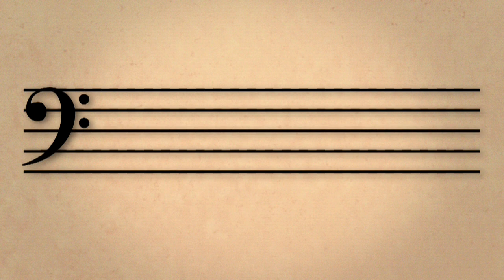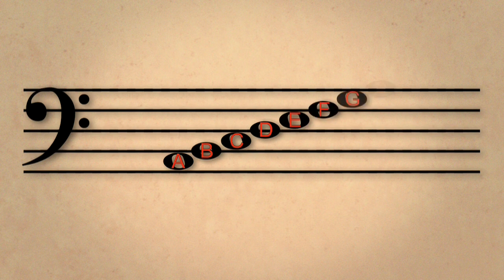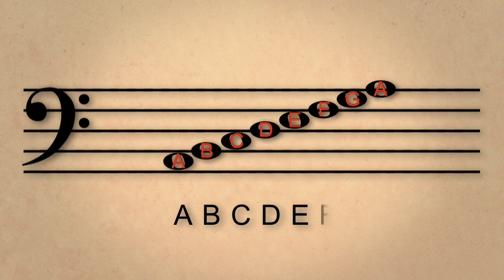The lowest space is an A. As we ascend from that space to the second line, and then to the second space and upwards, we once again spell out the seven letters of the alphabet: A, B, C, D, E, F, G.